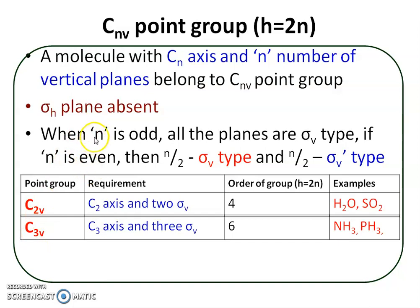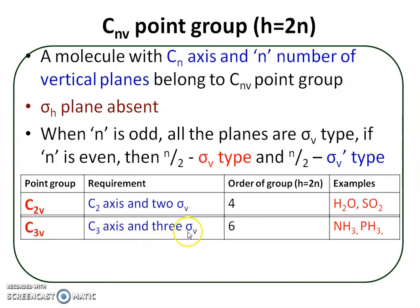The next example of CNV point group is the C3V point group. The molecule must contain a C3 principal axis and there are three vertical planes — three sigma V planes. If this condition is fulfilled, and the horizontal plane is absent, then the point group is C3V. The order of the group equals 6, since H = 2N, where N = 3, giving 2 × 3 = 6.